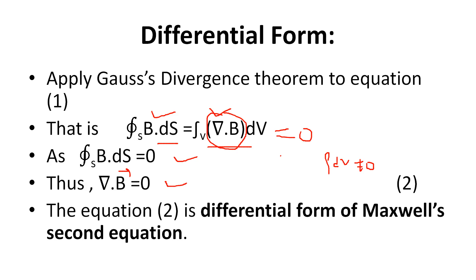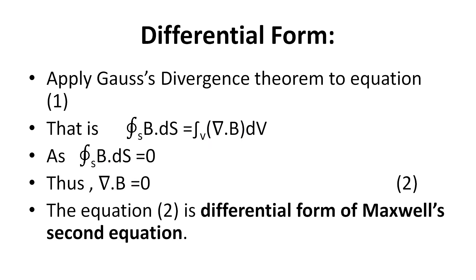So what is left is del dot B equals zero. Therefore, del dot B equals zero — that is equation two, the differential form of Maxwell's second equation. What is del dot B? Del dot is divergence; divergence means spreading. So divergence of B equals zero means there is no spreading of magnetic lines of force.